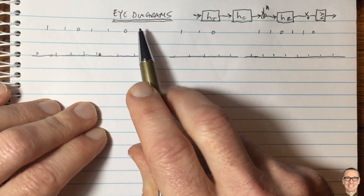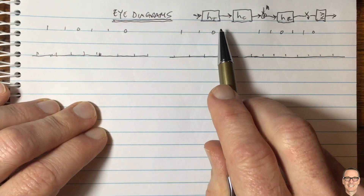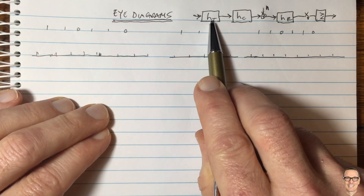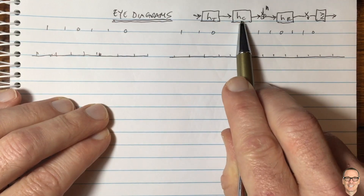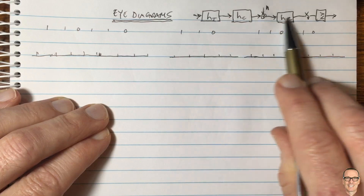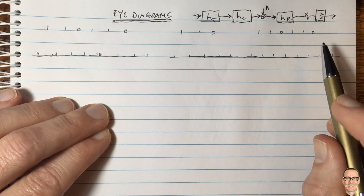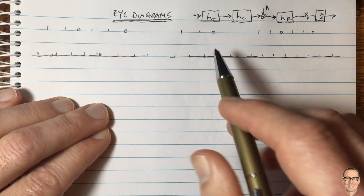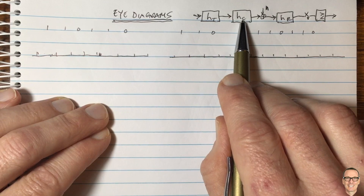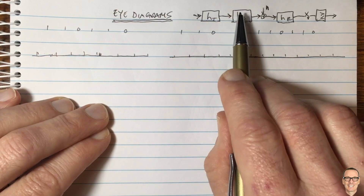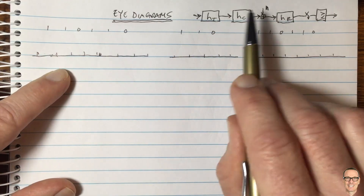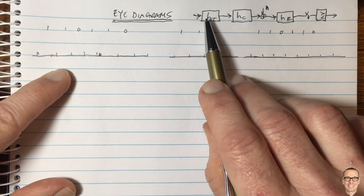Let's ask ourselves what is an eye diagram in a digital communication system. Here's our digital communication system with a transmit filter to make the pulse shape, a channel, noise at the receiver amplifier, and a receiver filter. For more information on this, check out the pulse shaping video on the channel linked at the end. Let's start by considering the channel as a flat fading channel, which means it's constant in the frequency domain, and let's not consider noise.